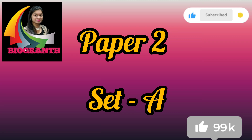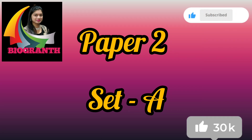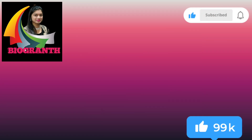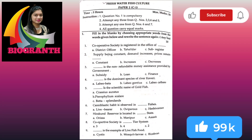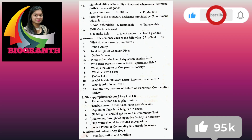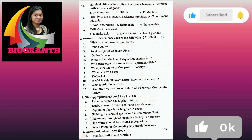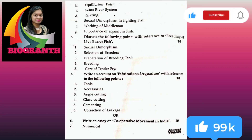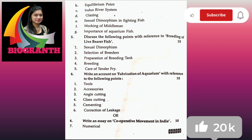Moving to paper 2 again of set A. This comprises again of the same paper pattern of 50 marks: first MCQs, second one-answer questions, then give reasons and appropriate answers, short notes, and long answer questions. So these are the types of questions which you will get in the paper sets.